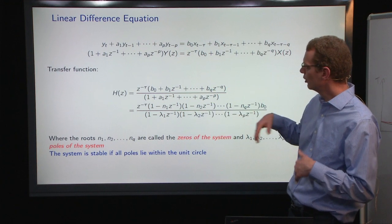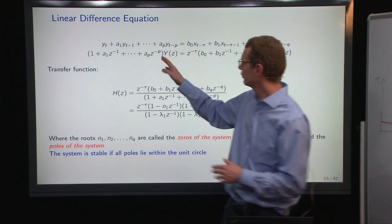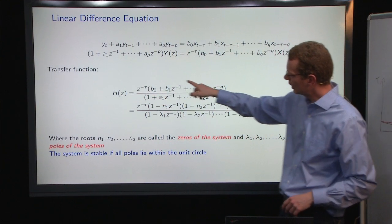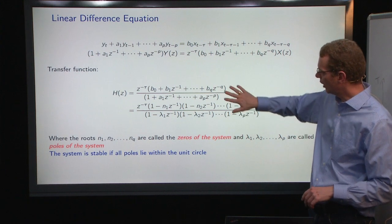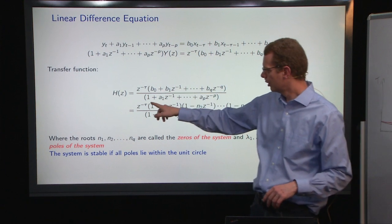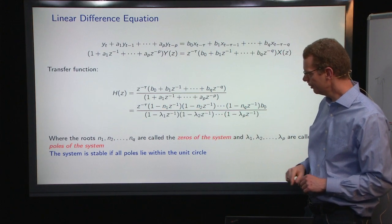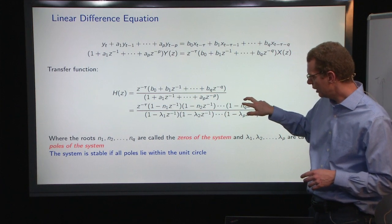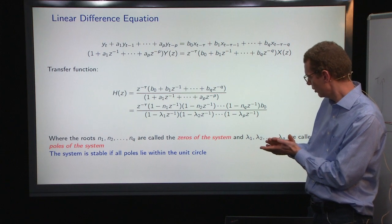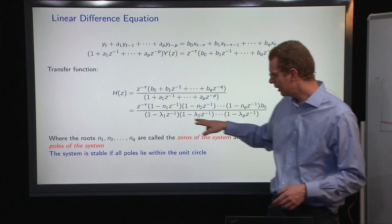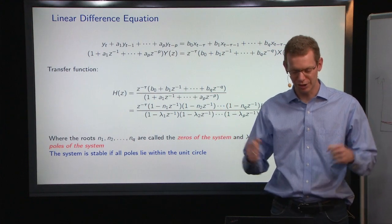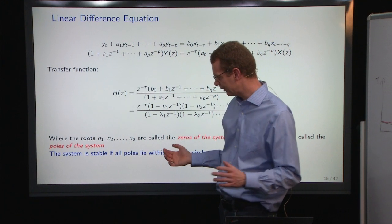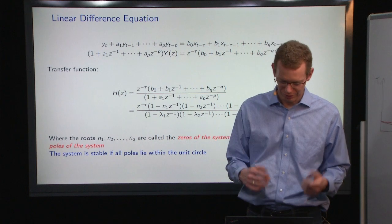Let's look at the definition of the transfer function. Basically, we divide by the autoregressive polynomial to get the transfer function of the system. We can write it either as polynomials or as products of the different roots. The roots in the numerator are called zeros of the system, because that's where it cancels out, and the roots in the denominator are called poles of the system, because that's where things explode. As we saw previously, if all those poles are inside the unit circle, then the system is stable.